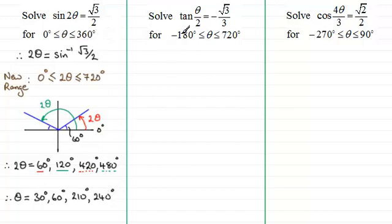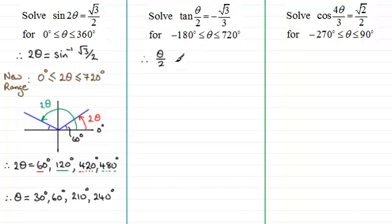Let's try the next one: solve tan of theta over 2, or tan of a half theta, equals minus root 3 over 3, for theta between minus 180 degrees and 720 degrees. You might like to have a go at this one — I'll give you a moment to pause the video. To get half theta, or theta over 2, what we need to do is inverse tan both sides. Therefore we've got theta divided by 2 equals the inverse tan of negative root 3 over 3.